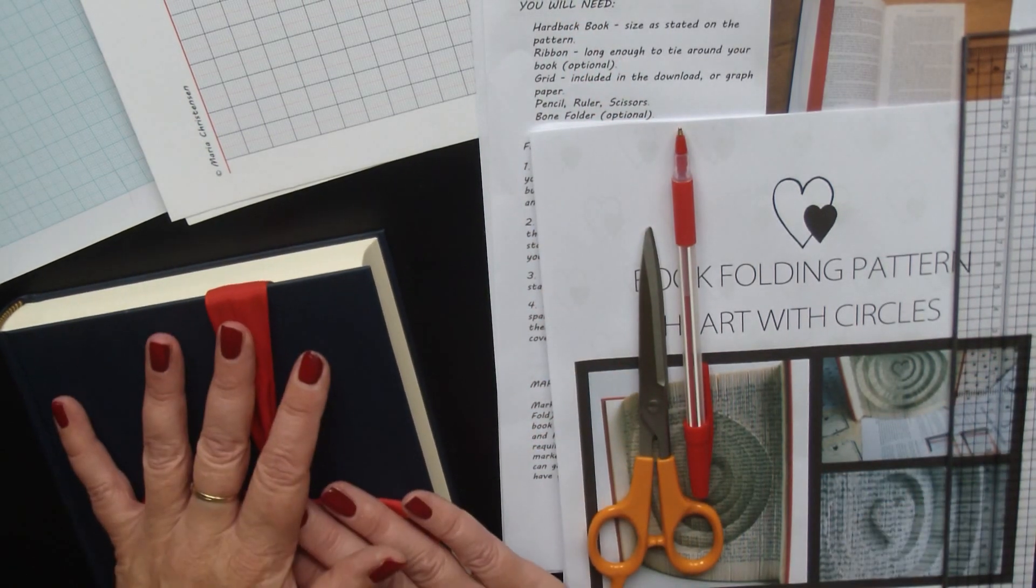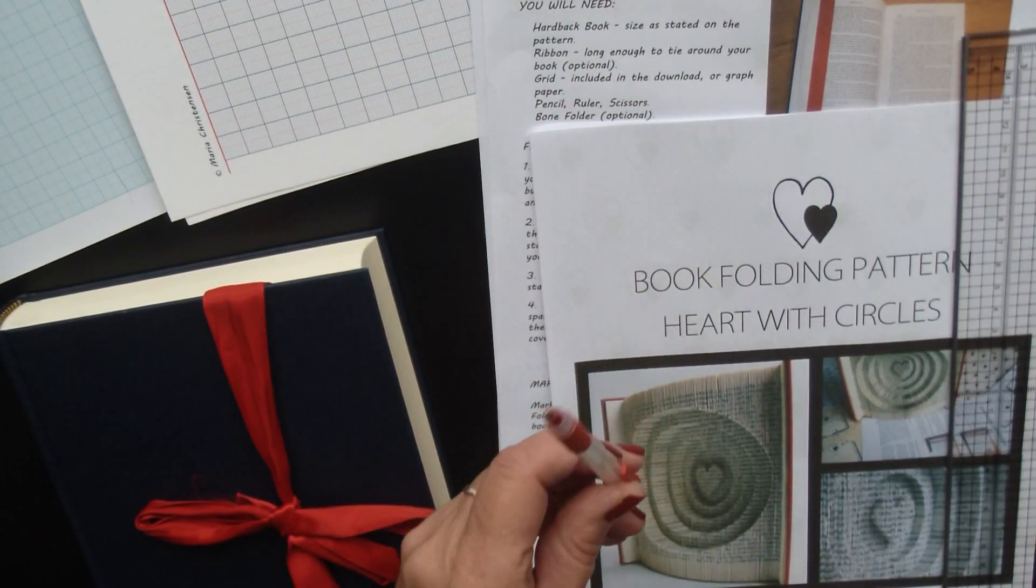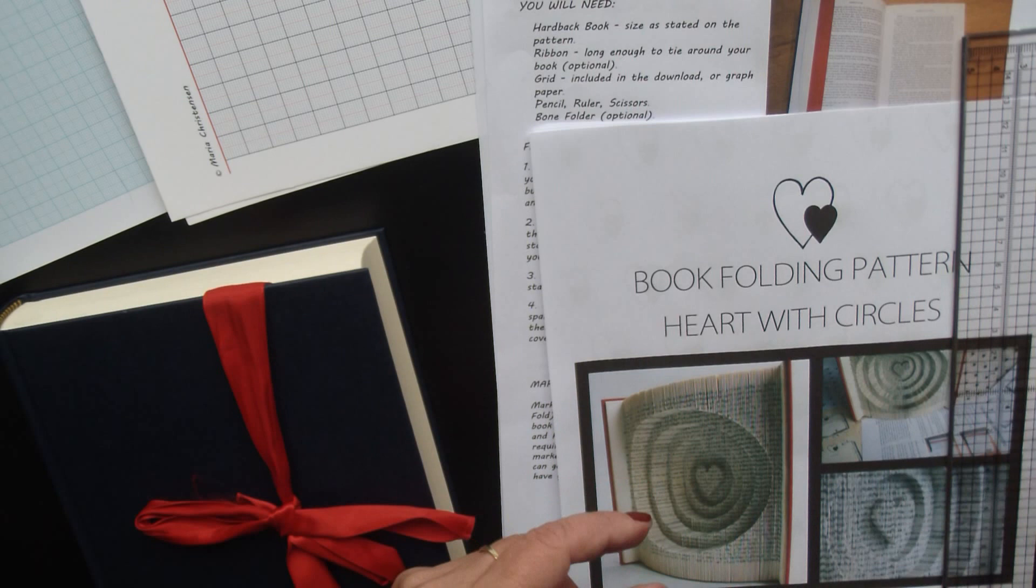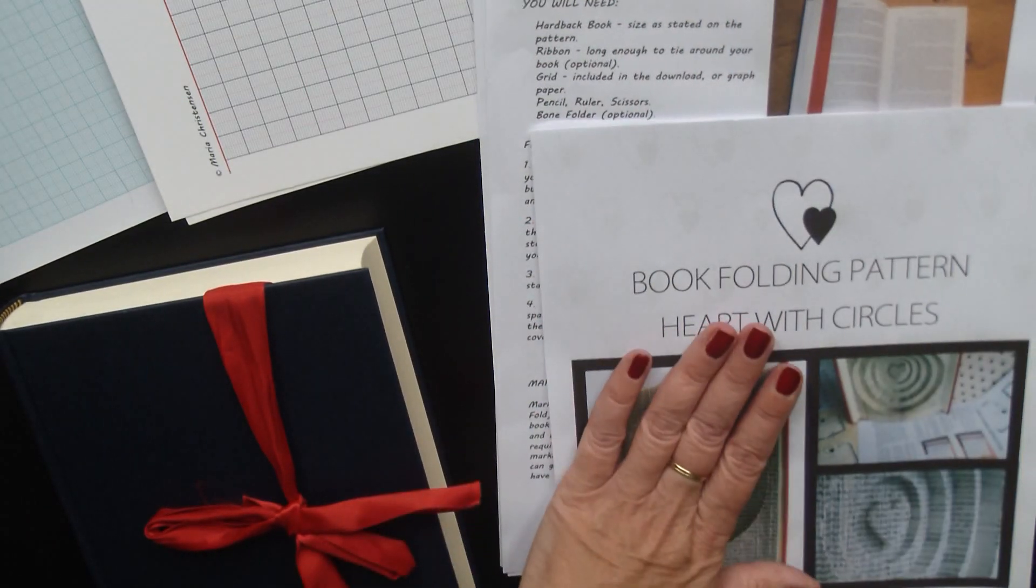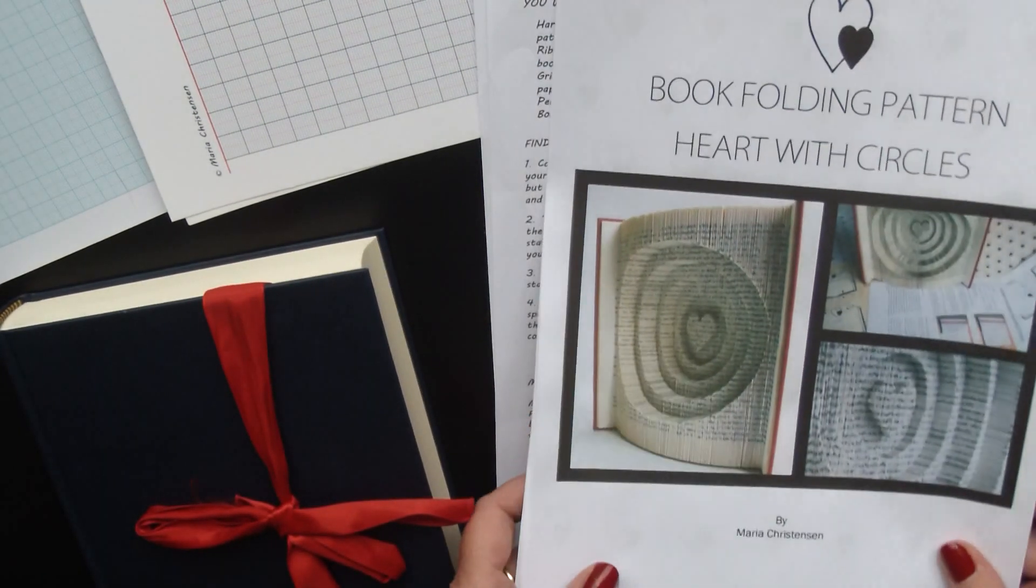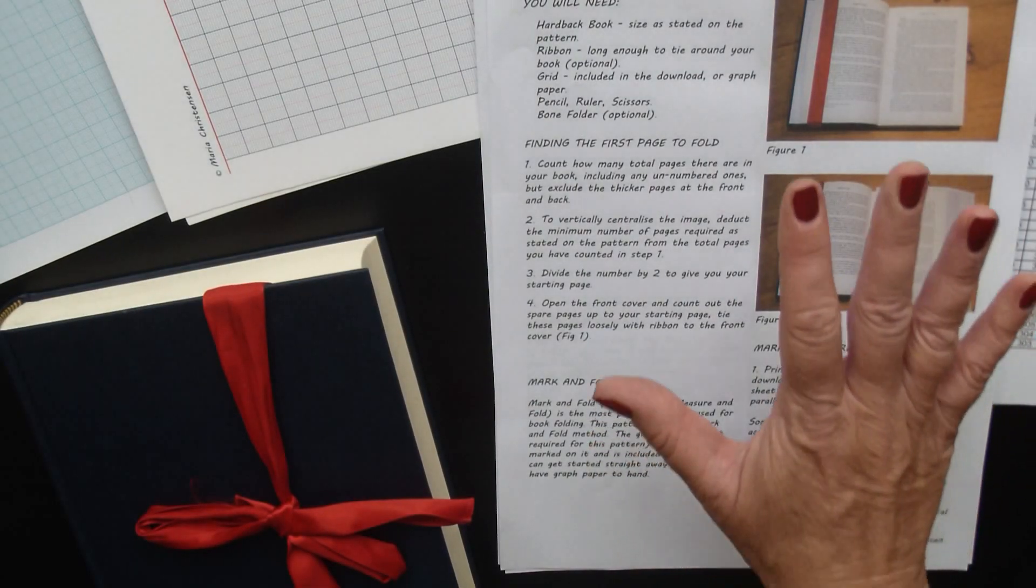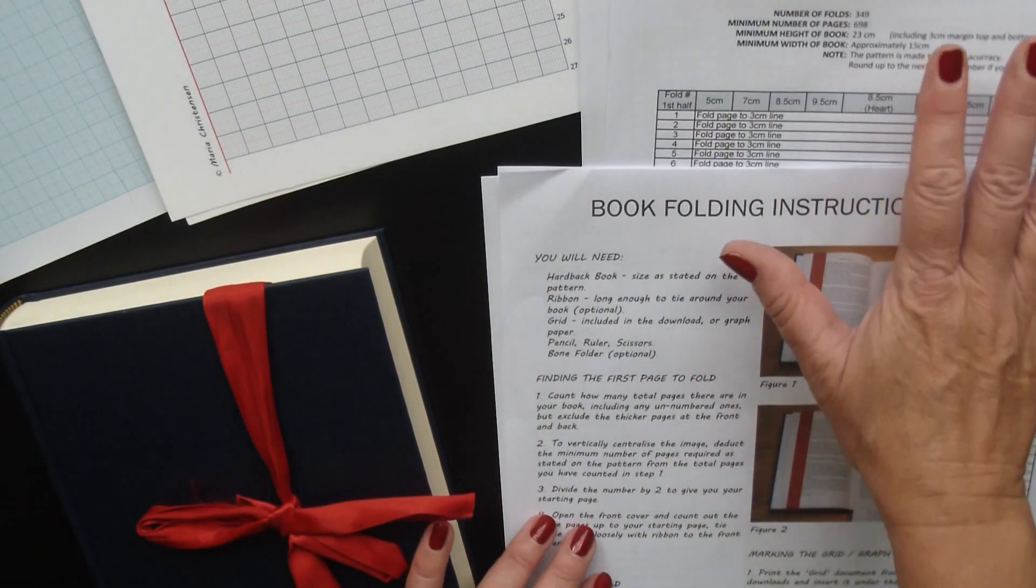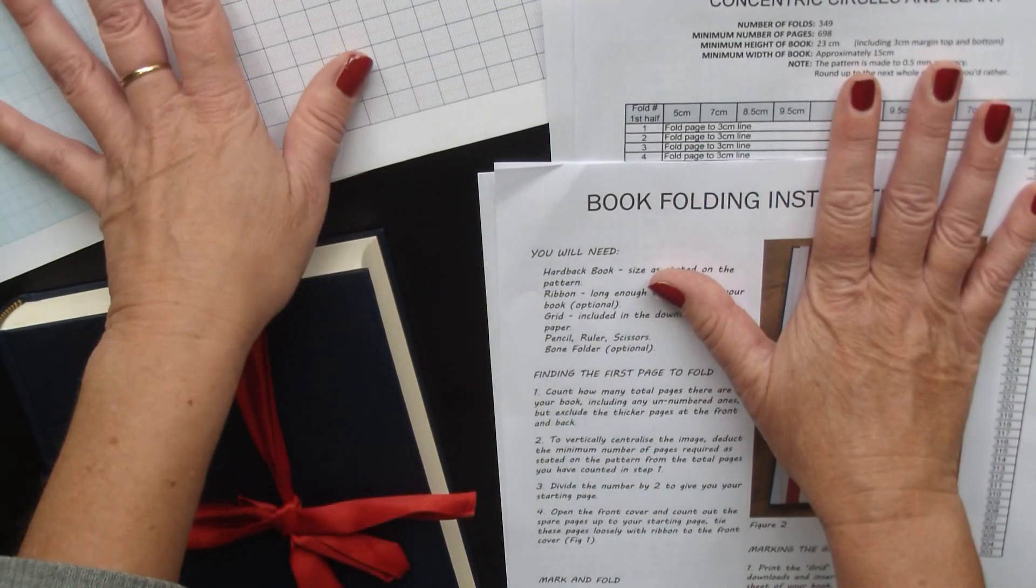So what you'll need is your book, scissors, pencil. I'm going to use a red pen here just so that it shows up a little bit better for you. You'll also need a ruler, your book folding pattern that you would have downloaded when you purchased the pattern, your instructions, your pattern sheet, and the grid or graph paper.